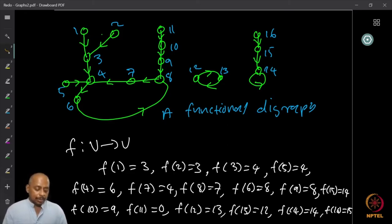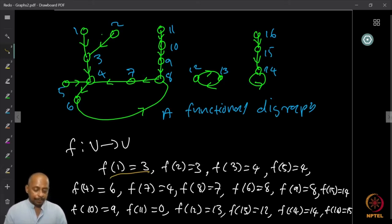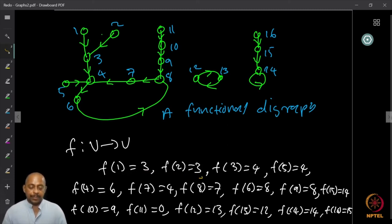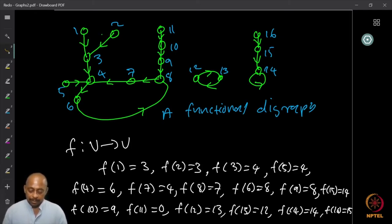A functional digraph represents the function from V to V by looking at the out-neighbor of each vertex. For example, f(1) = 3 because 1 maps to 3; f(2) = 3 since 2 also maps to 3; f(3) = 4; f(5) = 4; and f(14) = 14 because there is a loop at vertex 14.